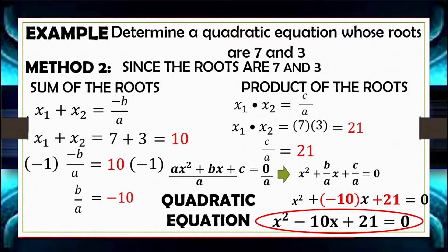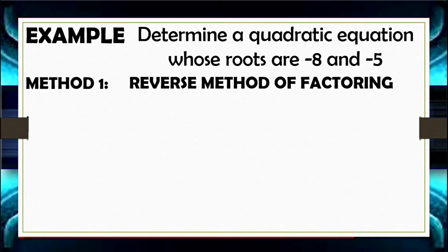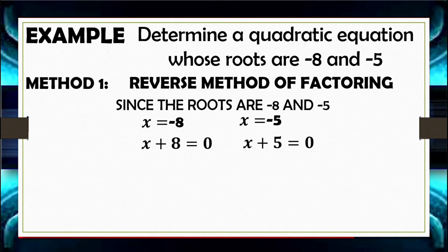Comparing the two methods, they both arrive at X squared minus 10X plus 21 equals 0. Let's have our second example: determine the quadratic equation whose roots are negative 8 and negative 5. Using the reverse method of factoring, X equals negative 8 gives X plus 8 equals 0, and X equals negative 5 gives X plus 5 equals 0.